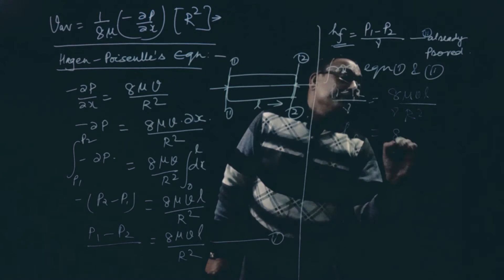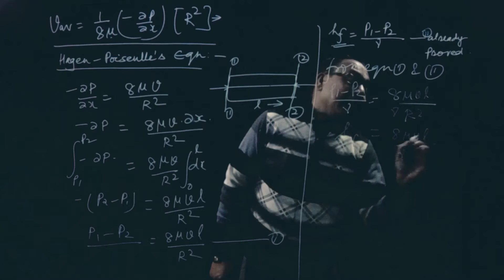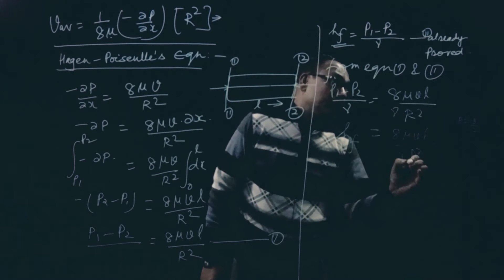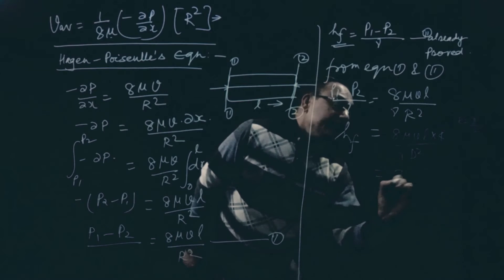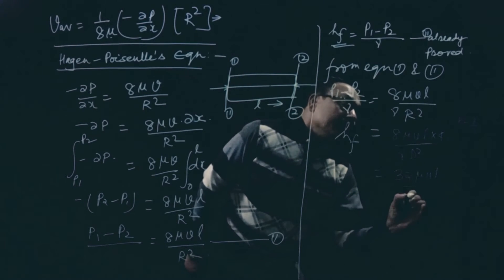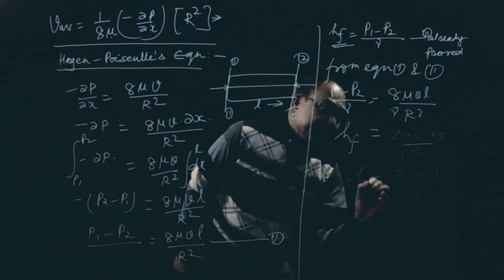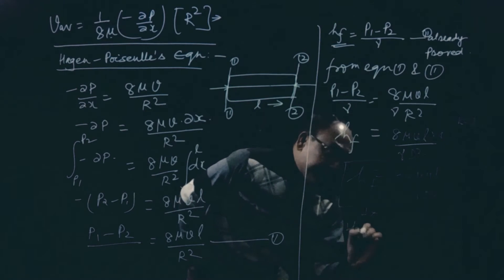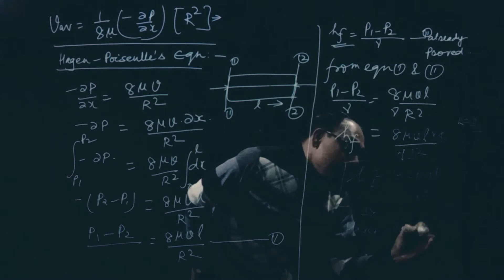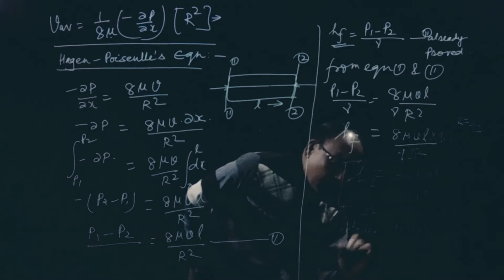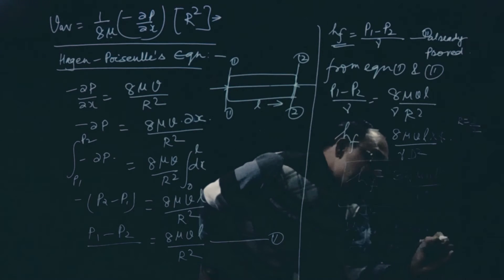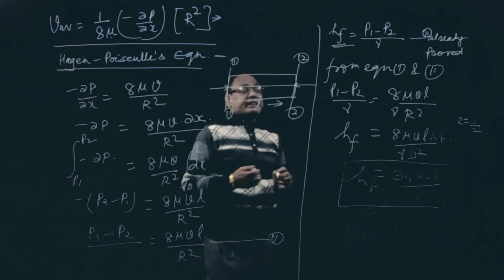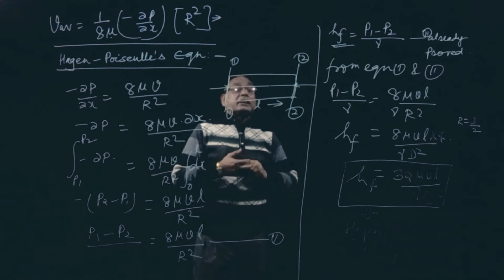So HF = 8μVL / (γR²). Since R = D/2, R² = D²/4, so dividing gives HF = 32μVL / (γD²). This equation is known as the Hagen-Poiseuille equation for laminar flow, valid for Reynolds number less than 2000. This is a very important relation for viscous flow frictional losses.